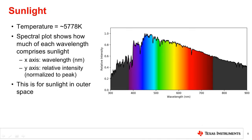The first light source we will explore is the sun. The sun has a surface temperature of about 5,778 Kelvin. The plot on the right shows the spectral emission of the sun zoomed in on the visible region.